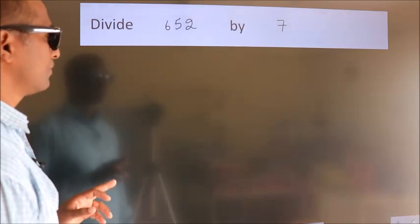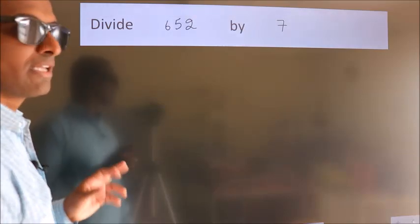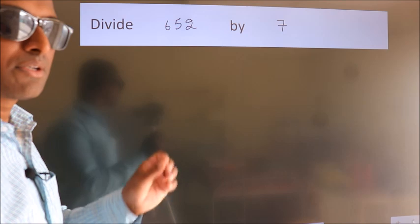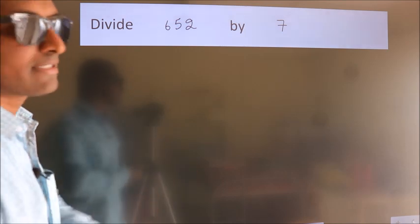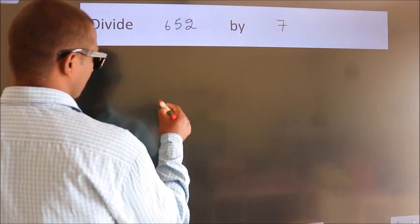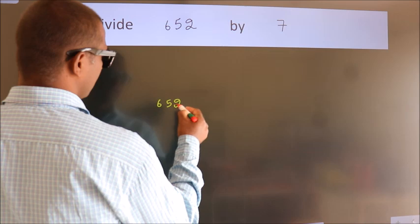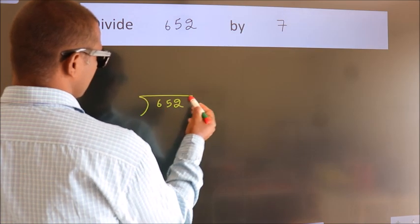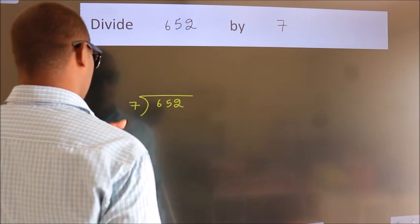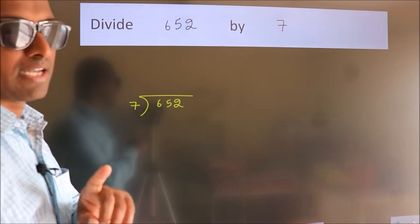Divide 652 by 7. To do this division, we should frame it in this way. 652 here, 7 here. This is your step 1.